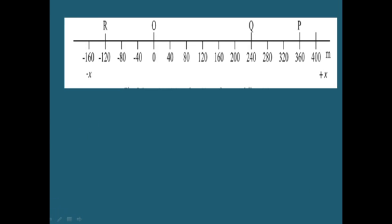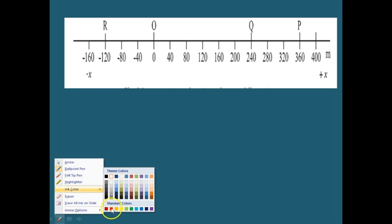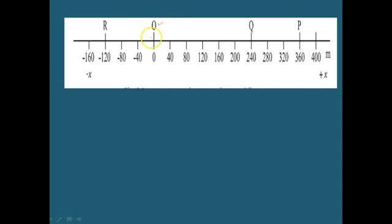To describe motion along a straight line, we choose an axis — say the x-axis — so that it coincides with the path of the object. We then measure the position of the object with reference to a conveniently chosen origin, say O. This point O is the reference point used for all measurements. Positions to the right of O are taken as positive, and positions to the left of O are taken as negative.